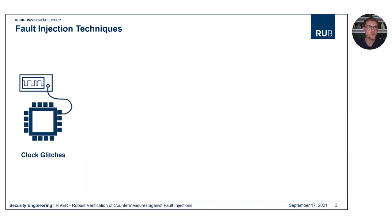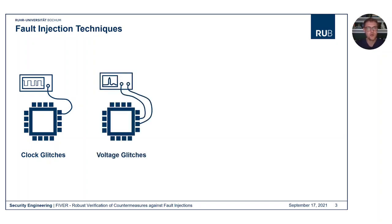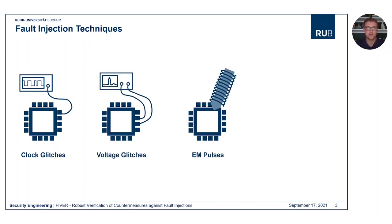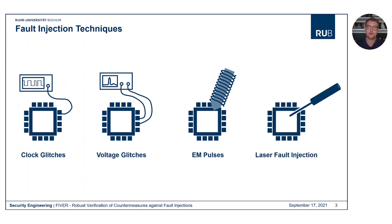To inject a fault in an ongoing encryption or decryption process, an attacker can use several techniques, which range from simple clock glitches or voltage glitches over more advanced techniques like using electromagnetic pulses or the high energy from a laser beam.